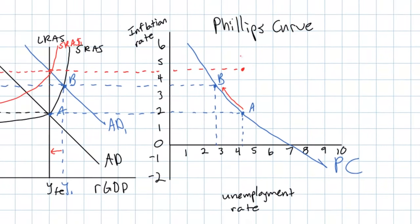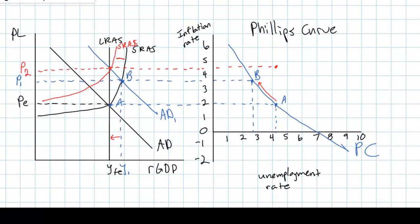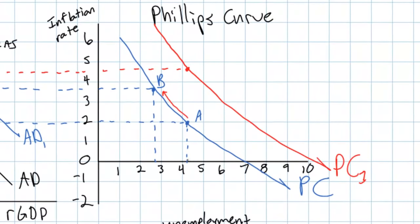As the short-run aggregate supply curve shifts to the left due to higher nominal wages demanded by workers now facing higher inflation, the short-run Phillips curve will shift to the right, giving us a new Phillips curve PC1 to the right of the original. In the long run there is no trade-off between inflation and unemployment. Connecting the two points we now have gives us a vertical long-run Phillips curve, vertical at the natural rate of unemployment.